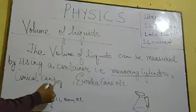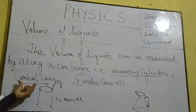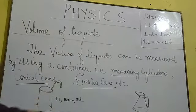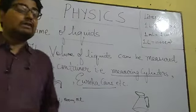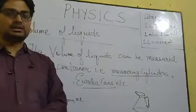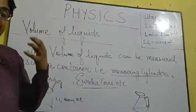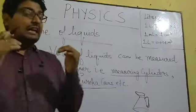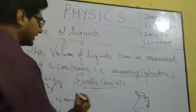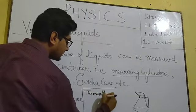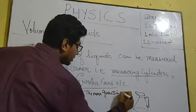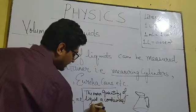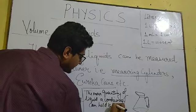It can be measuring cylinders, conical cans, or Eureka cans. We can use these kinds of containers or devices to measure the volume of liquids. The capacity is the maximum quantity of liquid that a container can hold — that is its capacity.